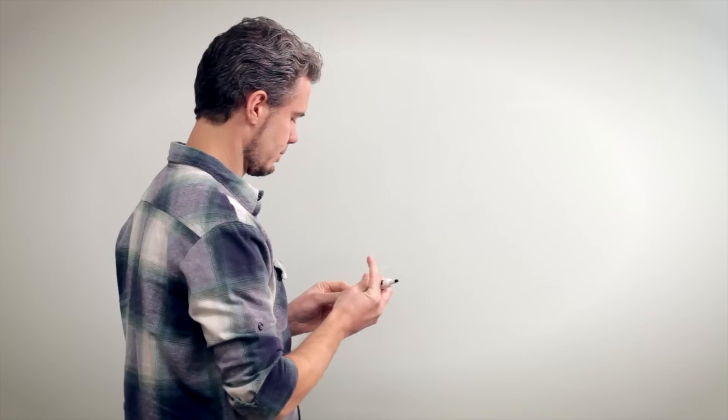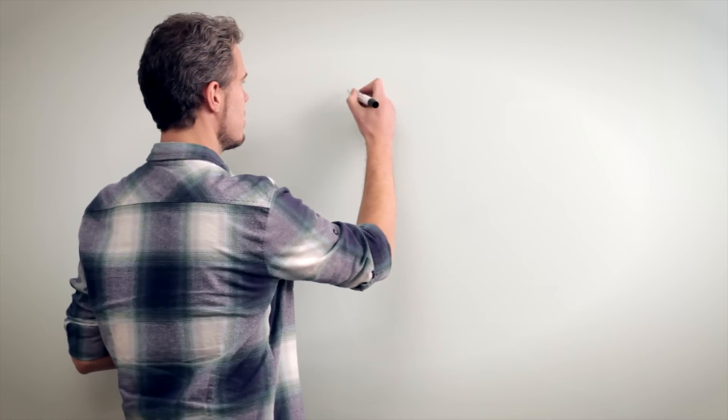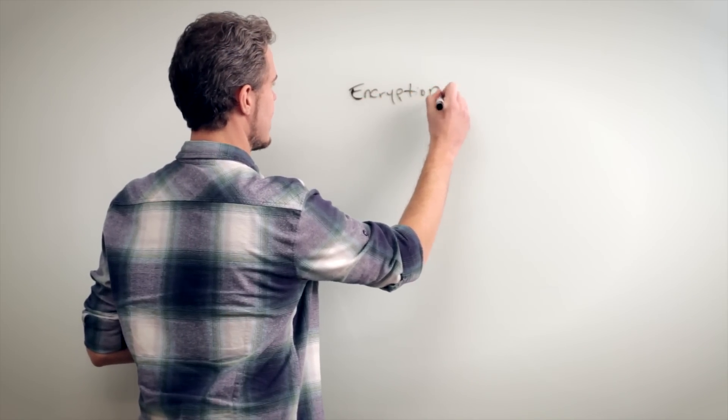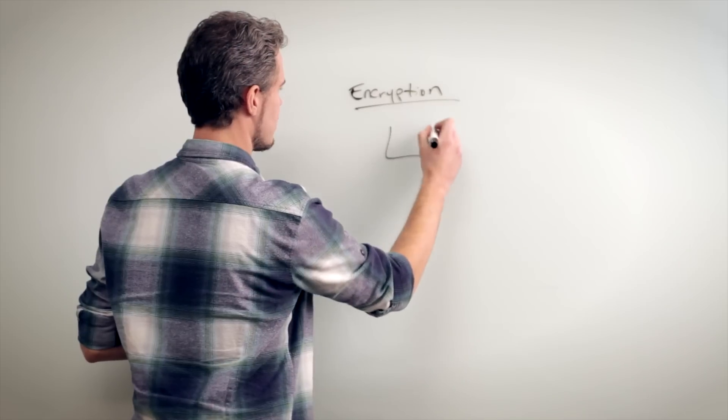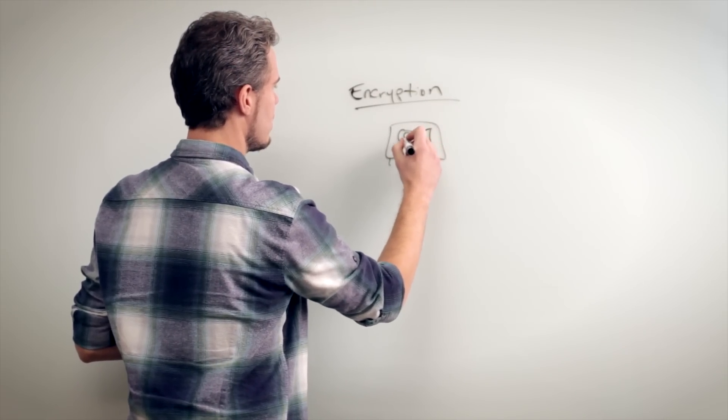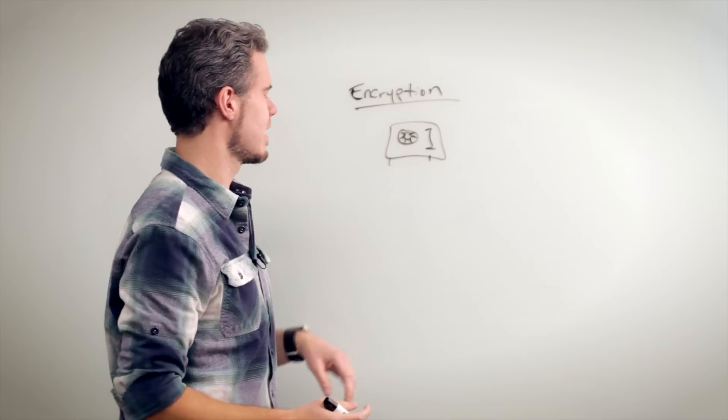So let's talk about conceptually what the difference is. For encryption, that is like a safe, right? So here is your safe, and if you know the password and you know the combination you can get into that safe.